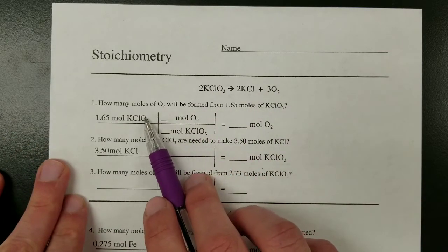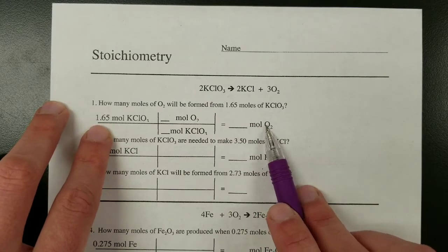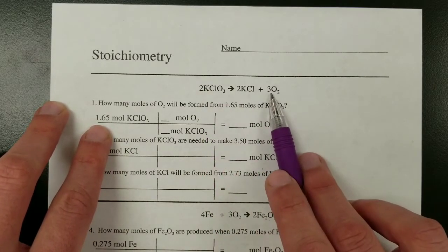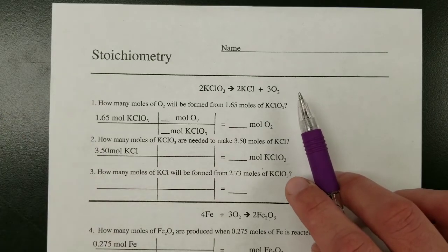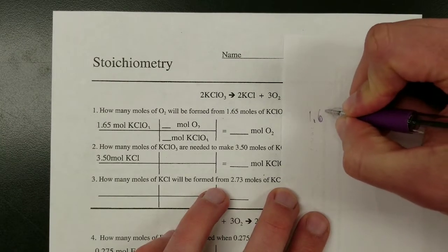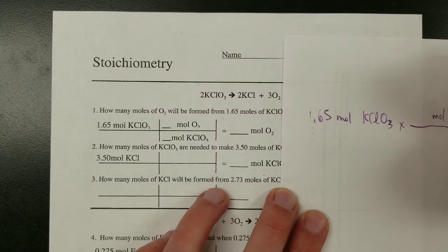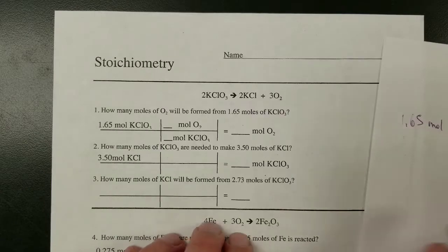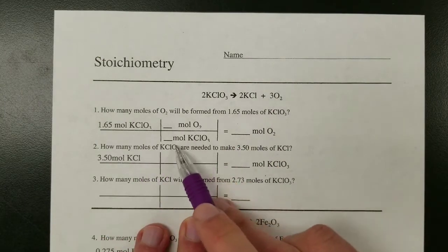Looking at this example: if we have 1.65 moles of potassium chlorate to start with, how many moles of oxygen are produced? We know that for every two moles consumed, three moles of oxygen are produced. So we set it up as 1.65 moles of KClO₃ times a conversion factor — moles of O₂ over moles of KClO₃ — equals moles of O₂. It's this times this divided by this equals this.